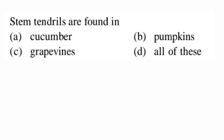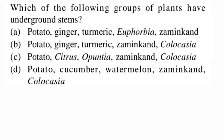Next question: stem tendrils are found in cucumber, pumpkins, and grape. Stem tendrils are slender and spirally coiled structures that come from the stem. You normally see them in cucumber, pumpkins, and grape vines — in grape they are modified apical buds. So option D is correct, as stem tendrils are seen in all plants mentioned.